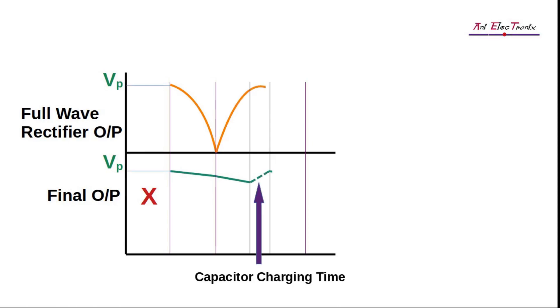The capacitor will charge and start discharging within a very short period of time, while the rectified pulsating voltage starts decreasing and is less than the capacitor voltage. This process will be repeated for each rectified pulsating input voltage.